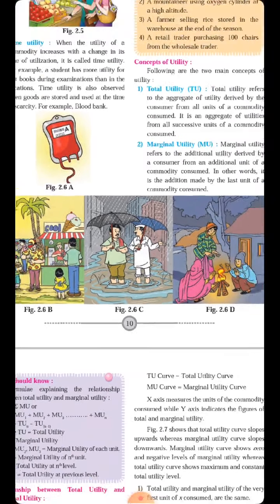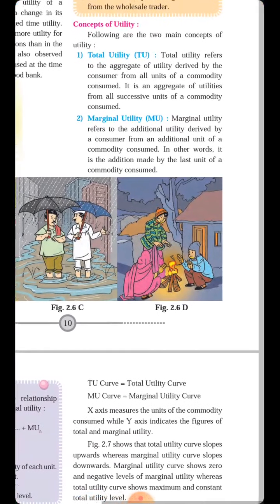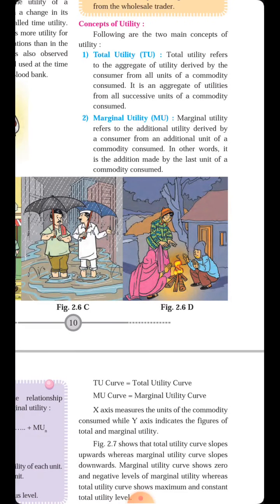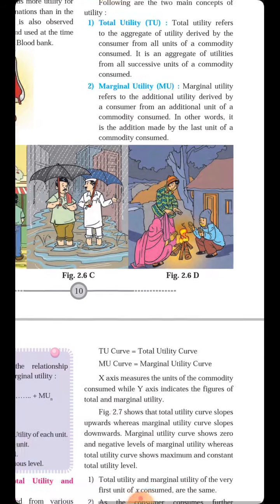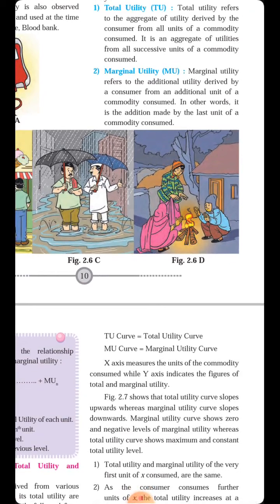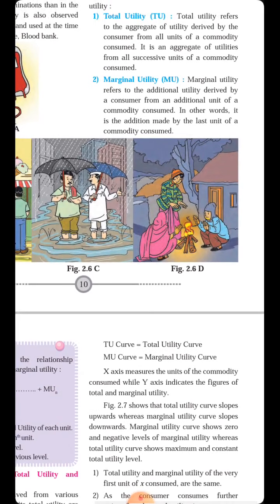To understand it simply, using the previous example: when I consumed the first glass of water, I received suppose 20 utils. My total thirst is 50 utils. Then I consumed the second glass of water and again received 20 utils. Now the first 20 utils and second 20 utils add up to 40 — that becomes my Total Utility of 40. But the first glass gave me 20 separately, and the second glass also gave 20 separately. Then from the third glass I got 10 utils. So 20, 20, and 10 — these separately calculated values are my Marginal Utility.